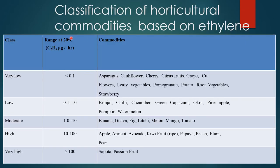Classification of horticulture commodities based on ethylene. There are five classes: very low, low, moderate, high and very high. In the case of very low, the range of ethylene is below 0.1 microgram per hour at 20 degrees centigrade. Examples include asparagus, cauliflower, cherry and citrus fruit.